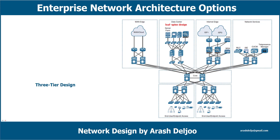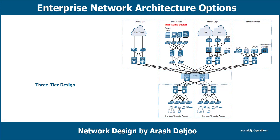The next model is the three-tier design. In the three-tier design, we have the access layer with end user endpoints, then the distribution layer, and also the core layer. One of the most important reasons to use the three-tier design is when we have more than two distribution layer switches — we need a core layer.